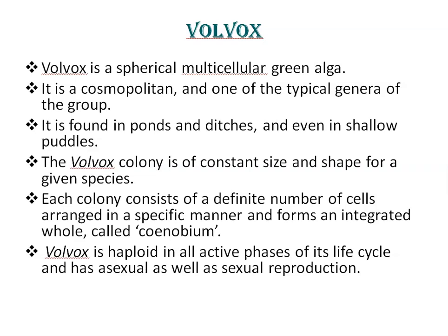It is found in ponds, ditches and even in shallow puddles. Volvox is one of the planktonic organisms which help to colour the water of the pond green. The Volvox colony is of constant size and shape for a given species. Each colony consists of a definite number of cells arranged in a specific manner and forms an integrated whole called coenobium. Volvox is haploid in all active phases of its life cycle and has asexual as well as sexual reproduction.